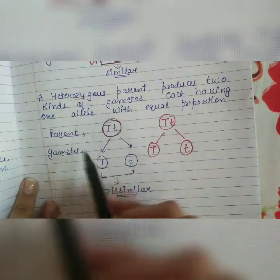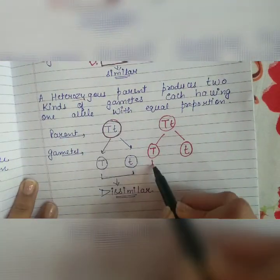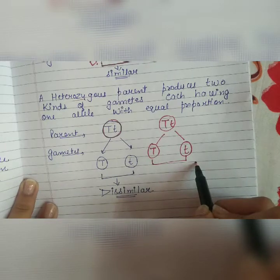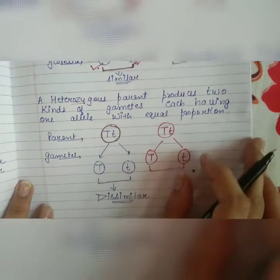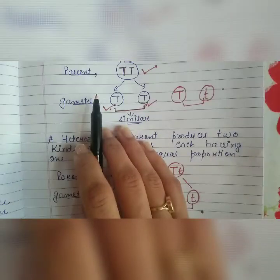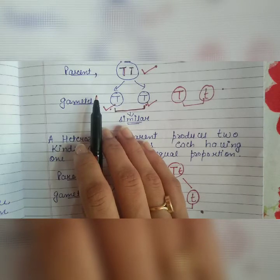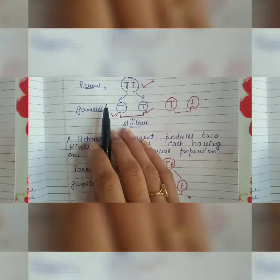A heterozygous parent produces two kinds of gametes, each having one allele with equal proportion. Ab yeh two different hai — Tt hai — ab ek mein capital T jayega aur ek mein small t jayega. Yeh jo homozygous ke case mein dono gametes mein similar alleles jayenge, but heterozygous ke andar hume different alleles dekhne ko mil jate hain. So guys, in this video we did the Law of Segregation, and in the next video we'll do the Law of Independent Assortment.